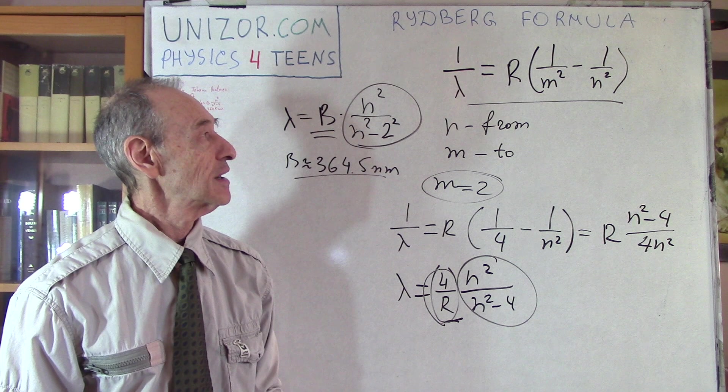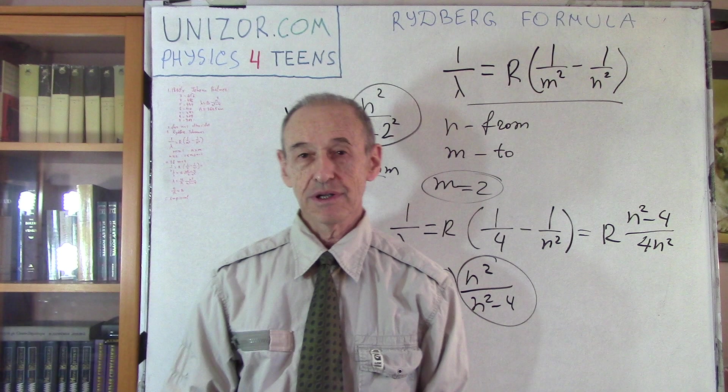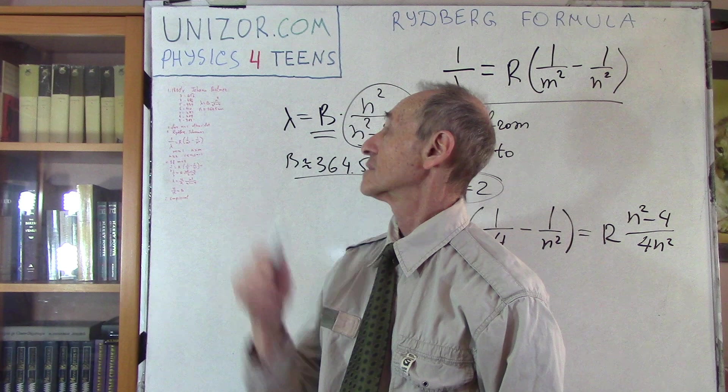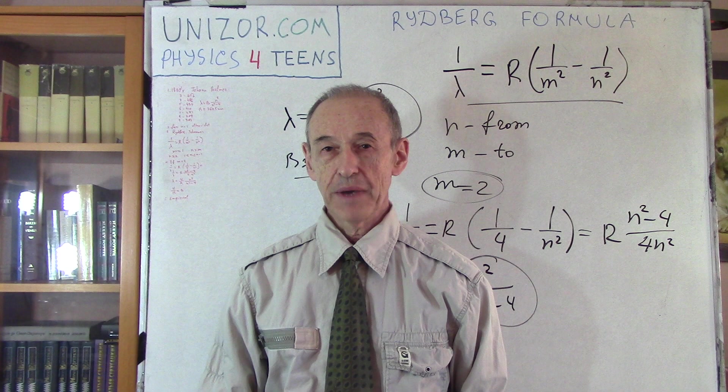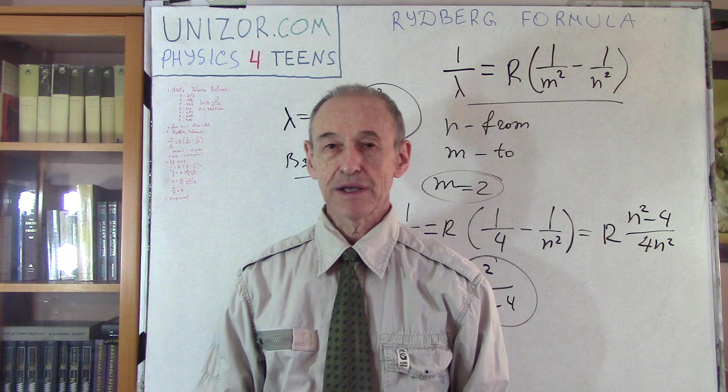So, that's what it is. I do suggest you to read the notes for this lecture. It's on Unizor.com. If you go to Atoms and the Physics for Teens course, then you go to Atoms, and it's building blocks of matter chapter, series of lectures. And this lecture is about Rydberg formula. Rydberg or Rydberg, I'm not sure. All right, that's it. Thank you very much, and good luck.